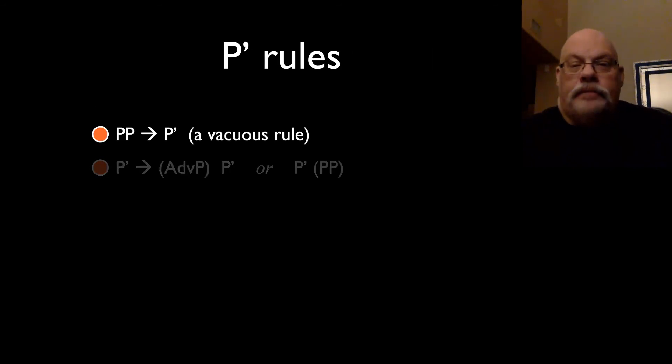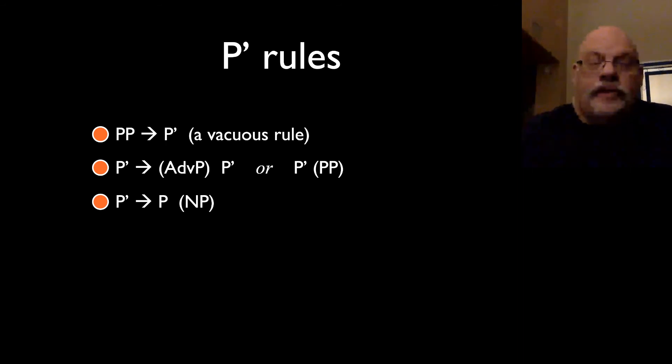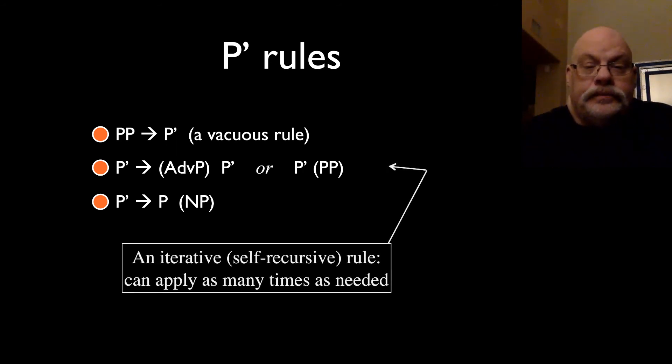We're going to propose three rules, just like the verb phrase. Take it on faith from me for the moment about the first rule. We will come back to that. But what's important are the second and third rules. The second rule again is an iterative rule or a self-recursive rule, if you prefer, which feeds itself. So you can have any number of P bar categories as you need. And then the third rule introduces the head noun and the noun phrase.